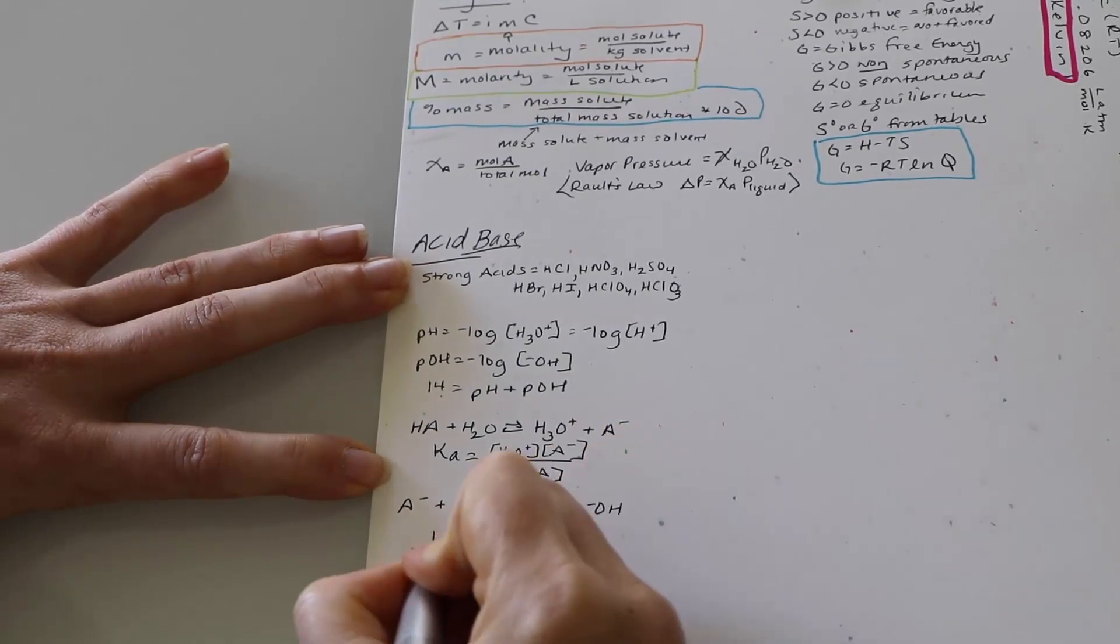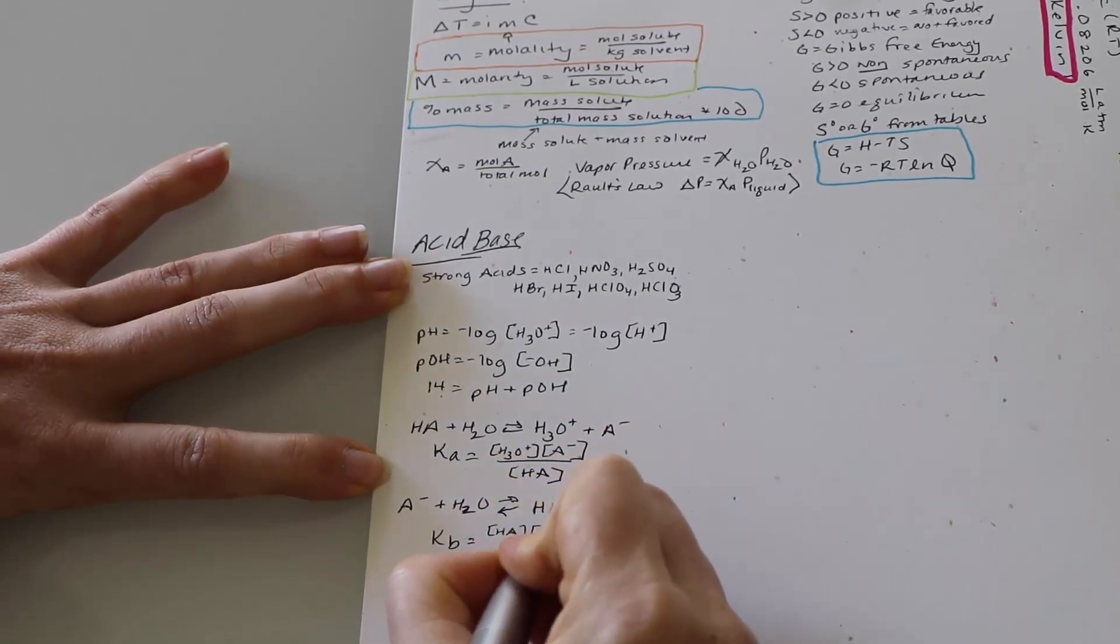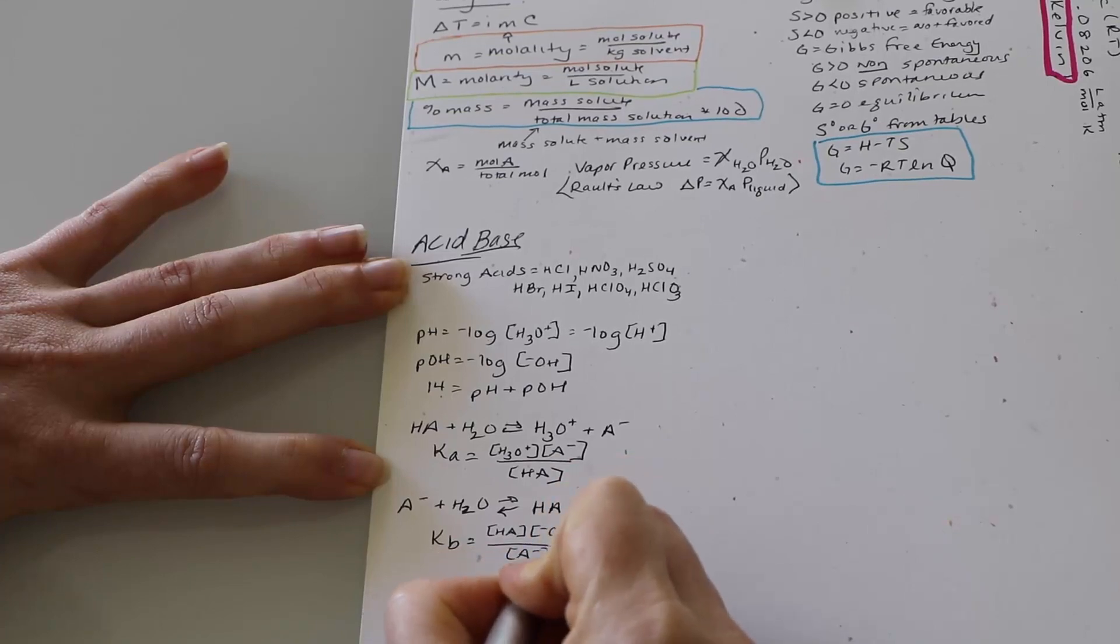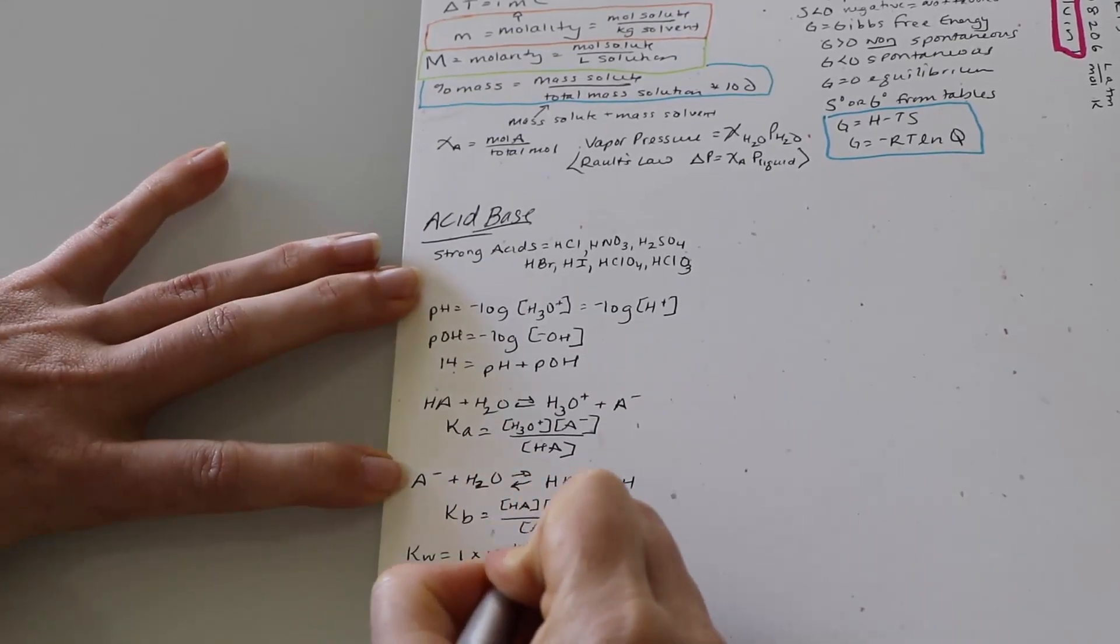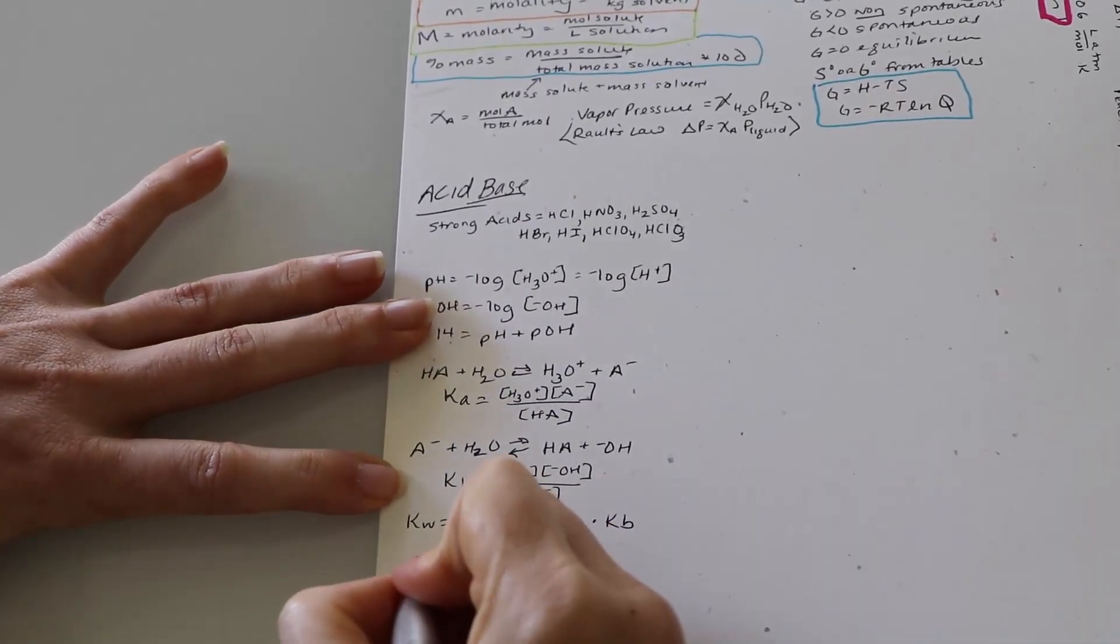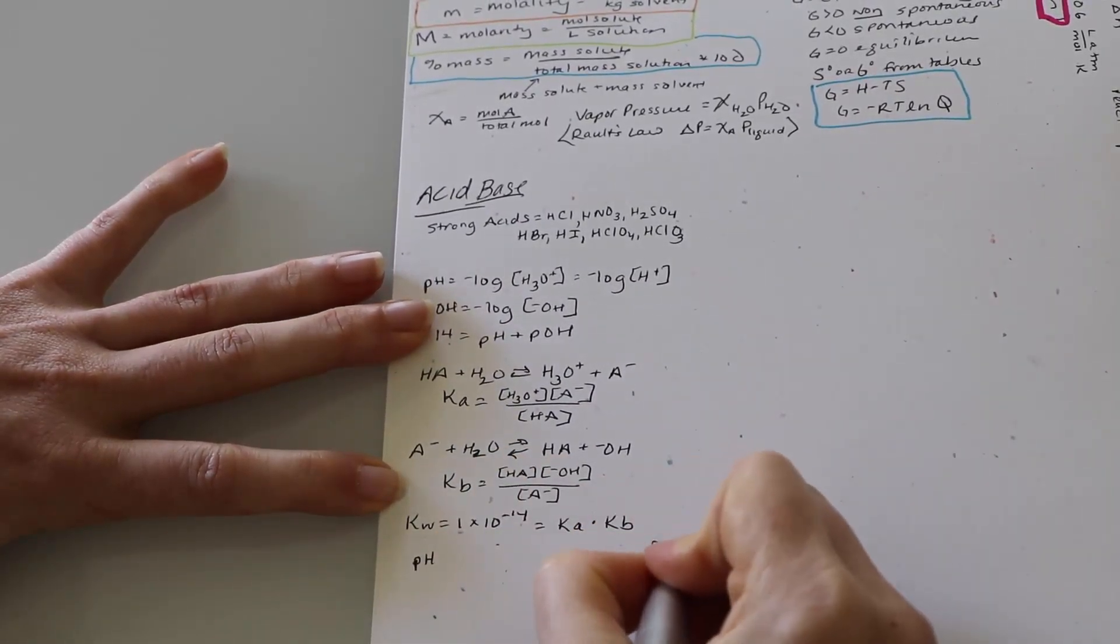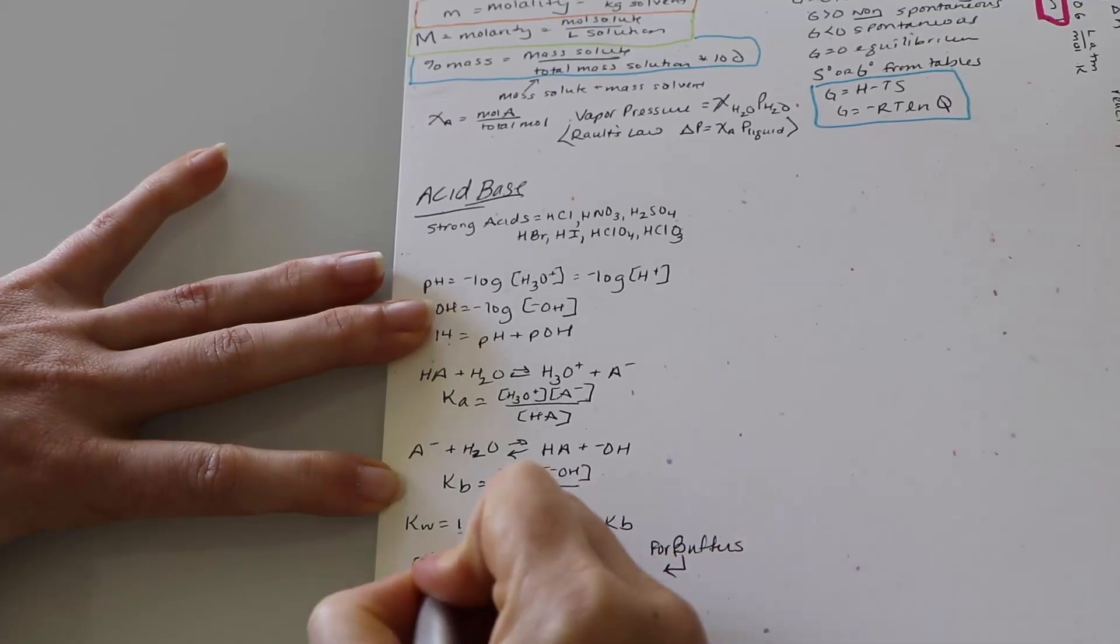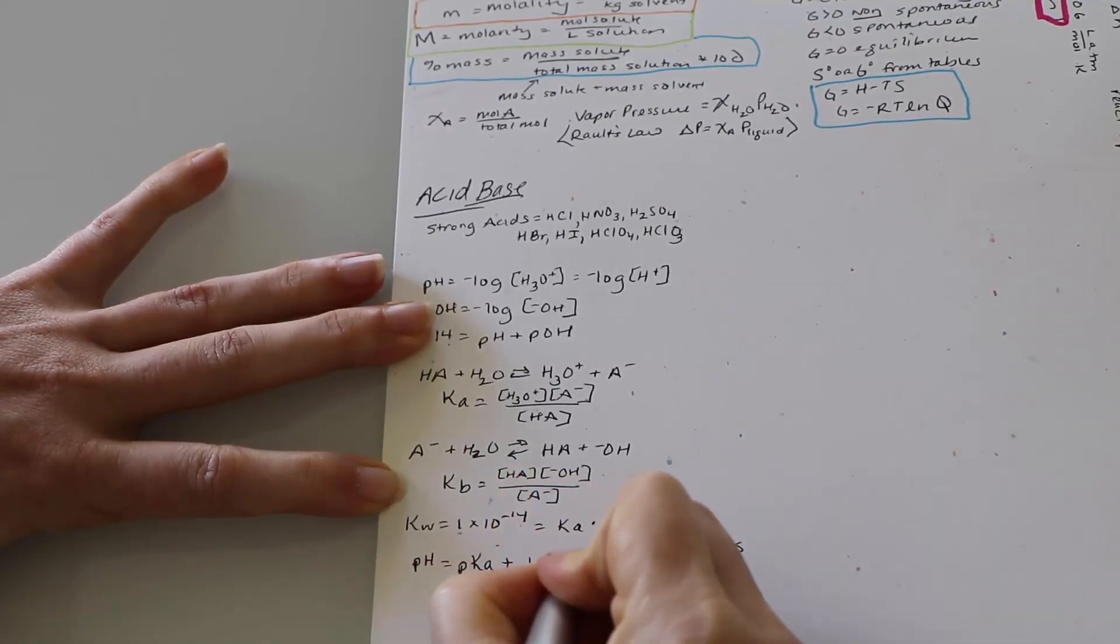And then I have some samples. Now I do not work sample problems with this sheet. If you feel you need to, write smaller and put a few sample problems in. And I indicate the KA and the KB. Now KW is equal to a constant 1 times 10 to the negative 14. And that is also equal to KA plus KB.